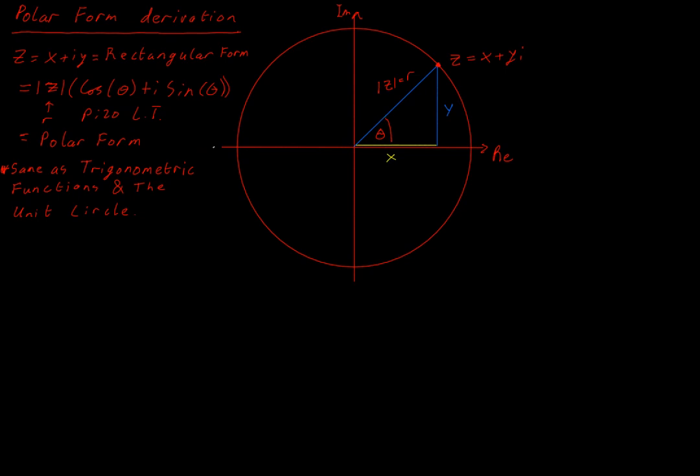So if we think to what we already know about complex numbers, we know that there's a strong connection between them and rotation. Multiplying by i rotates us anti-clockwise through 90 degrees.